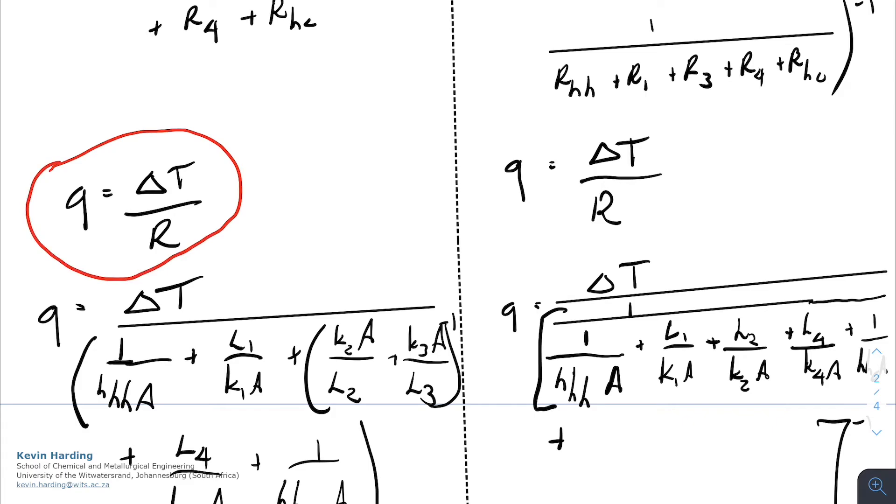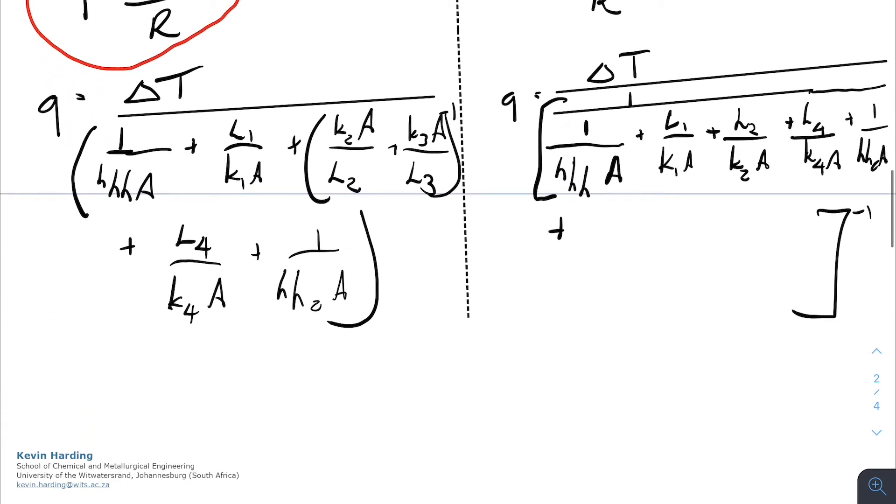We remember that Q is equal to delta T over R, so we can replace that as a term of delta T divided by, and then we have one divided by the convective heat transfer on the hot side multiplied by the area. Plus the L1 on K1A terms for rows one and four at the bottom here.